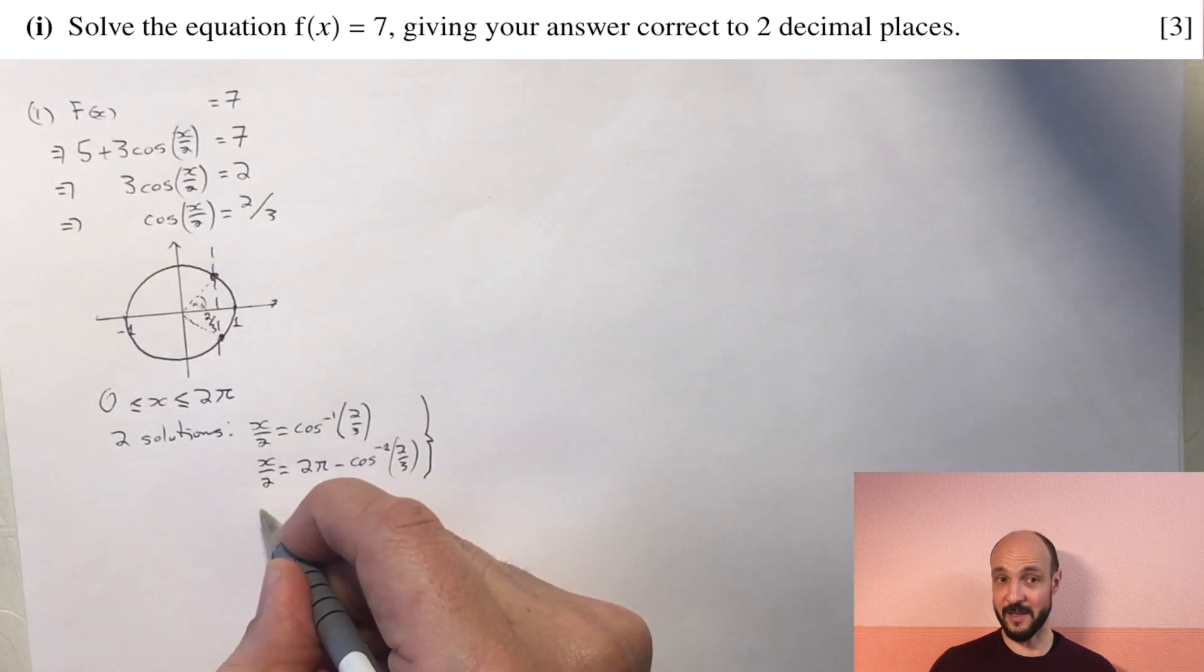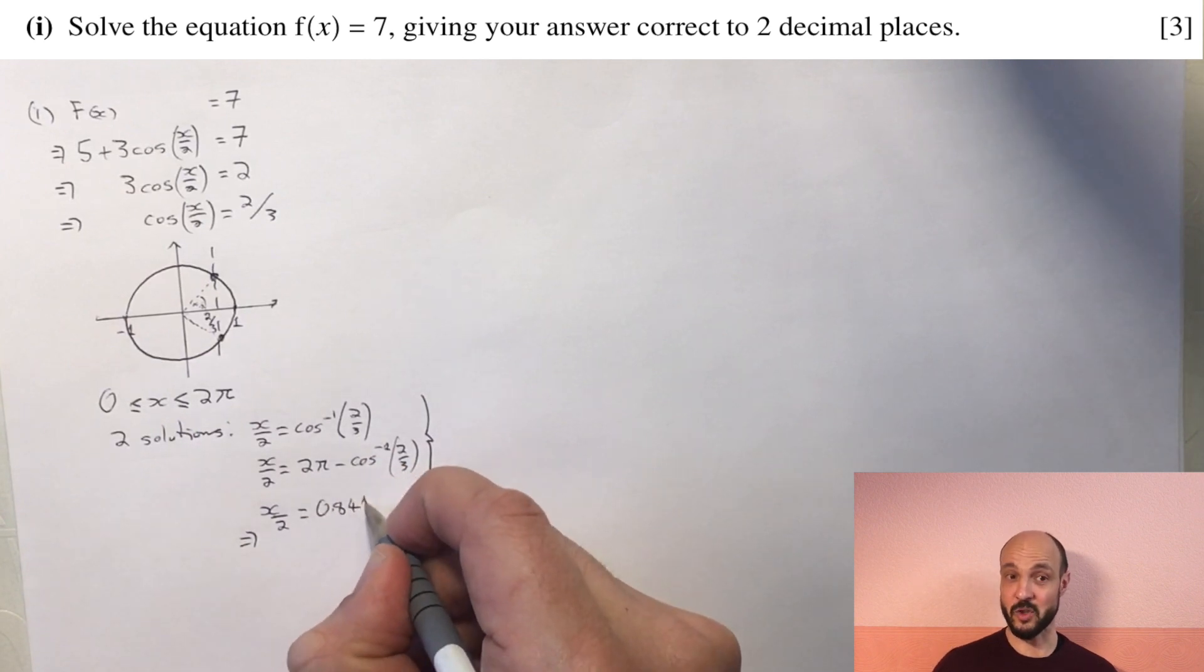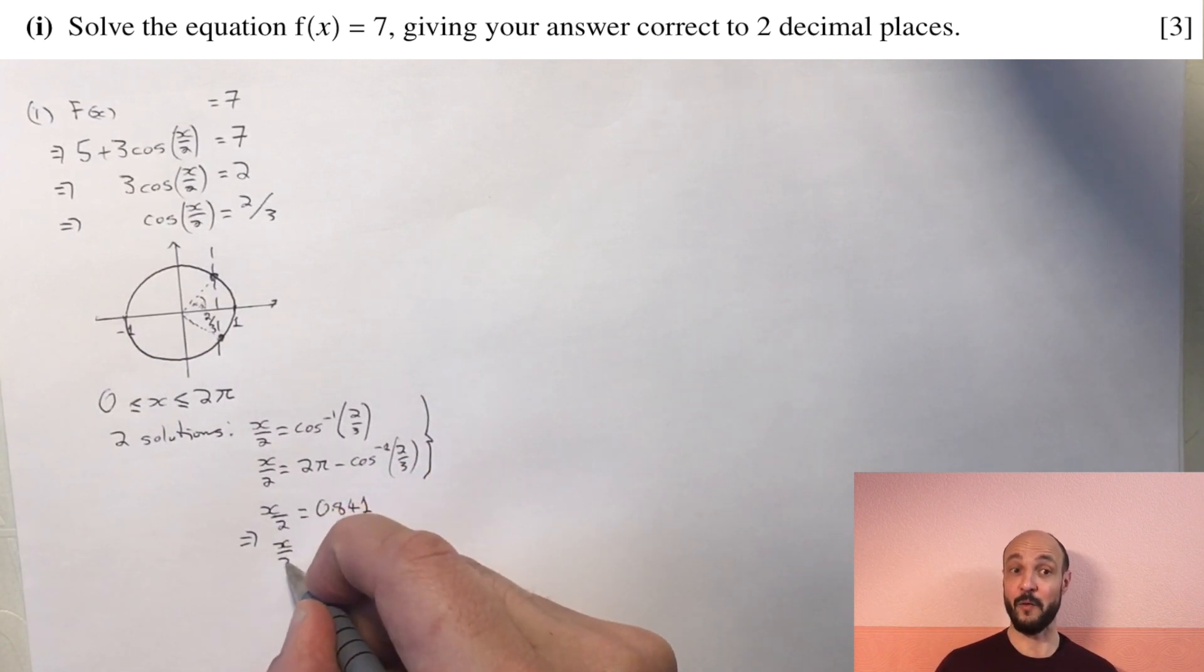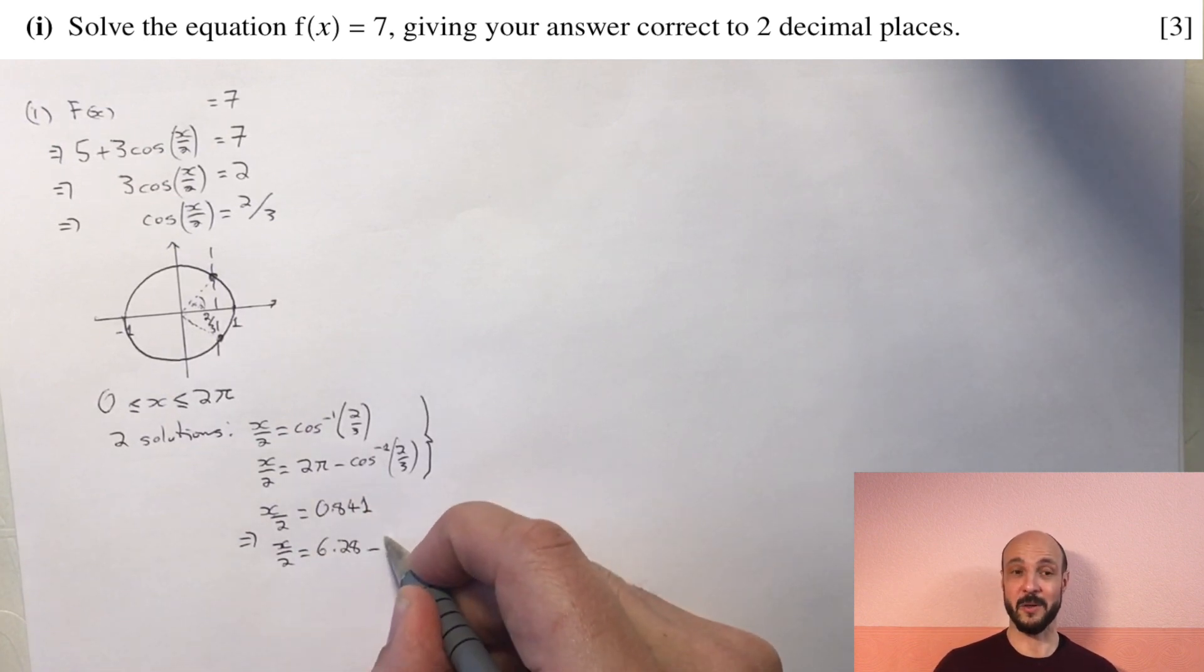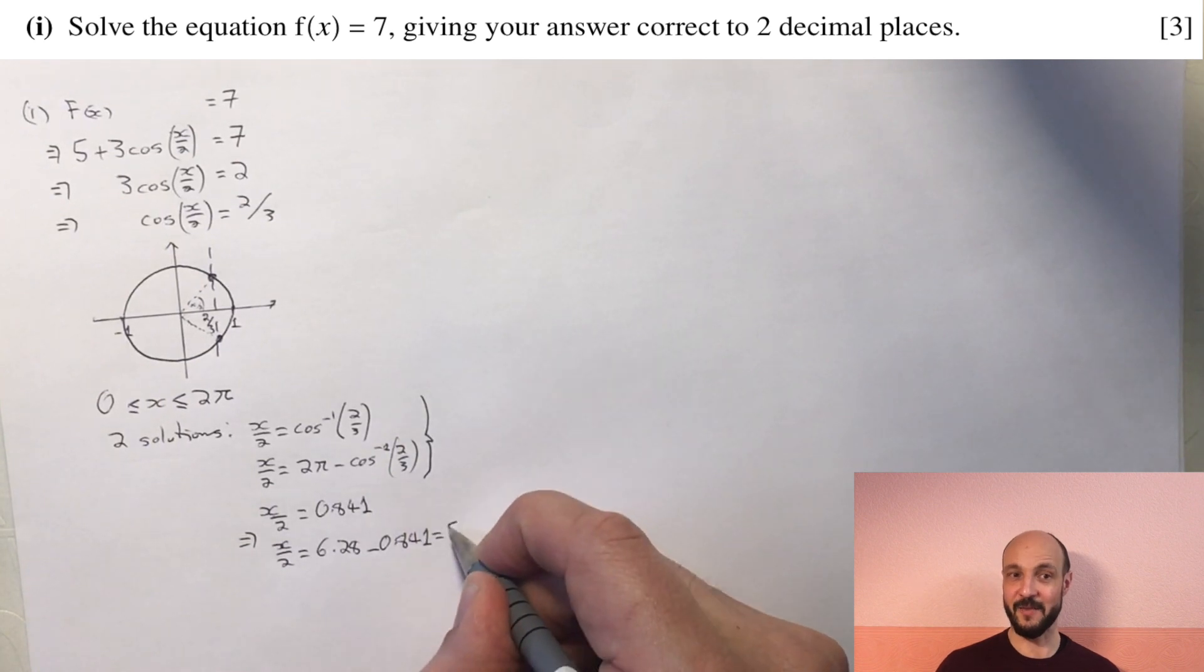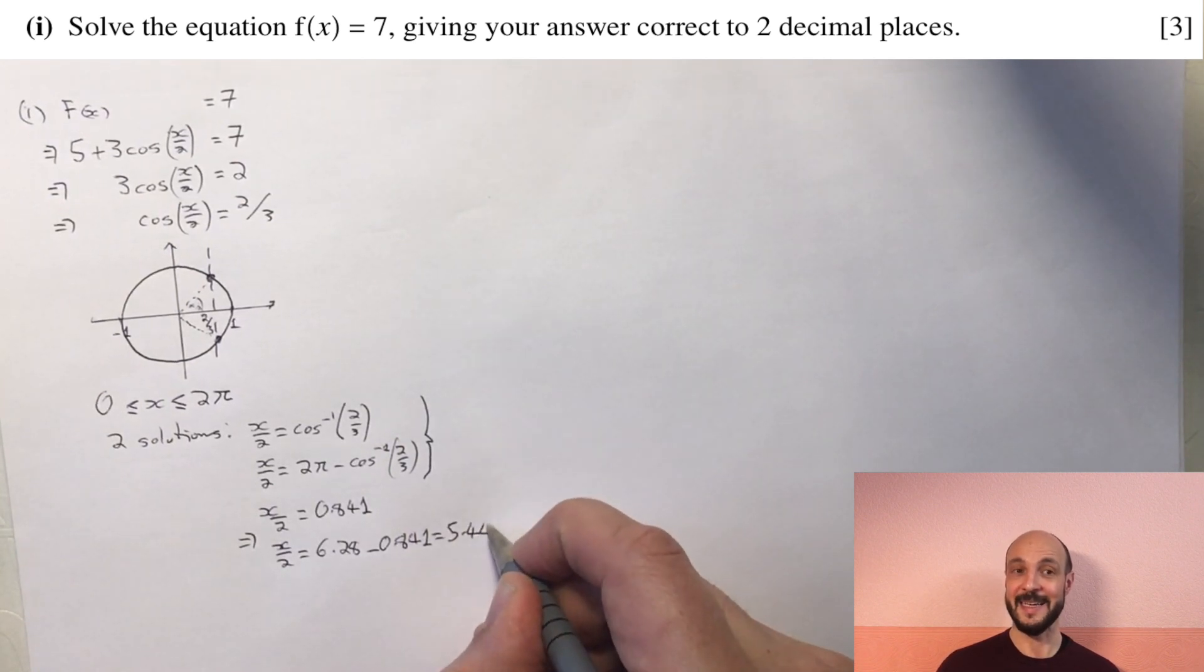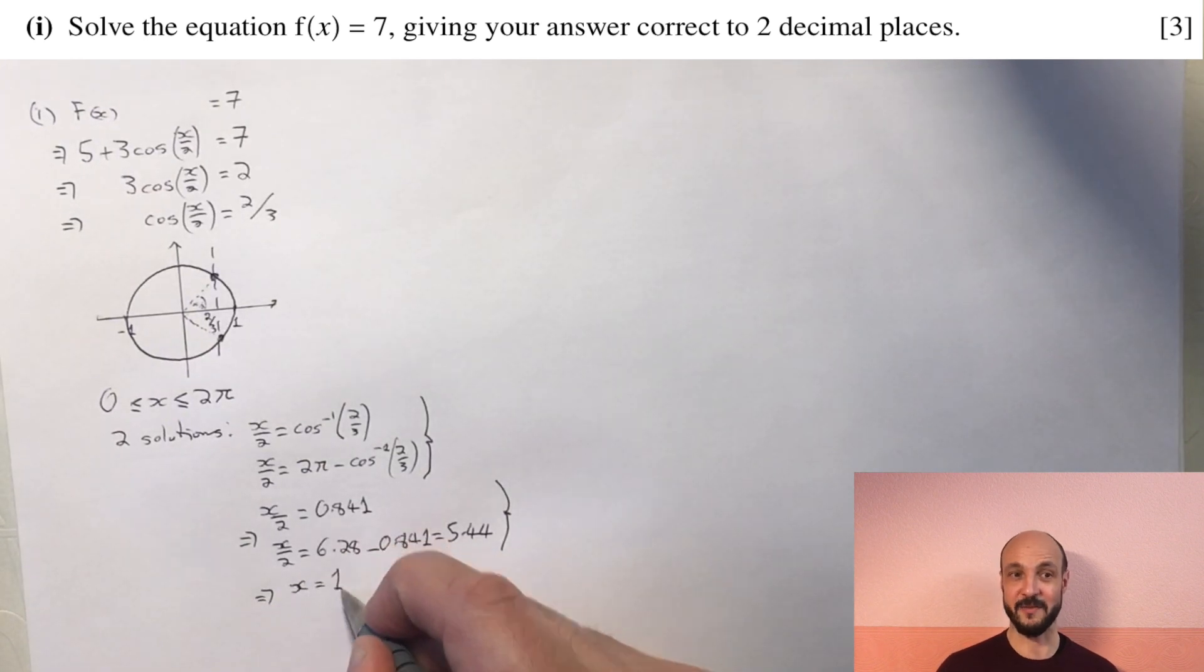Which gives us the two values when we multiply both sides through by 2: x equals 1.68 and x equals 2 times 5.44 which is 10.88. Our second value at 10.88 is outside of our domain, it's greater than 2π, so there's only one answer for us which is x equals 1.68 to two decimal places.